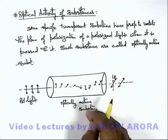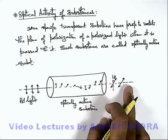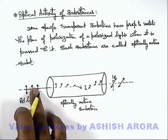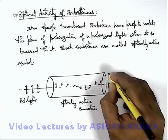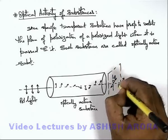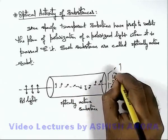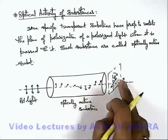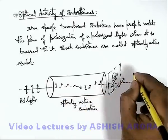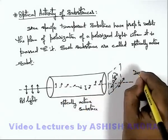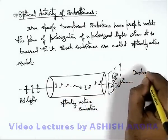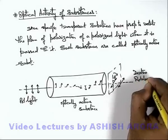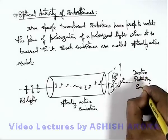So this is the way how the rotation of the plane of vibration takes place with respect to the initial direction. If it is rotating the plane of vibration in a clockwise form, such substances we call dextro-rotatory substances.